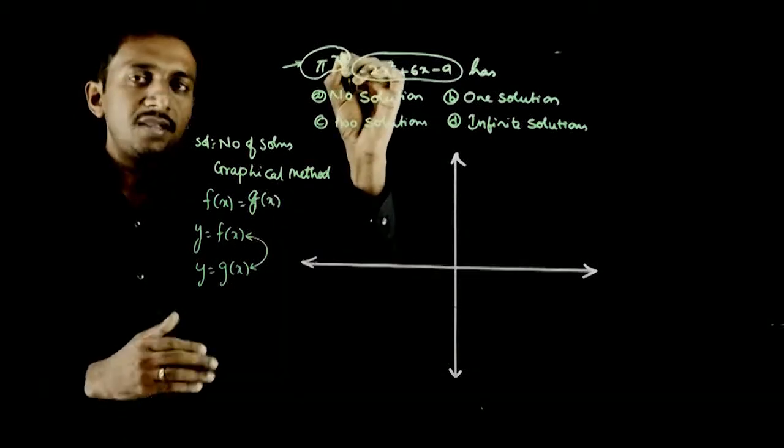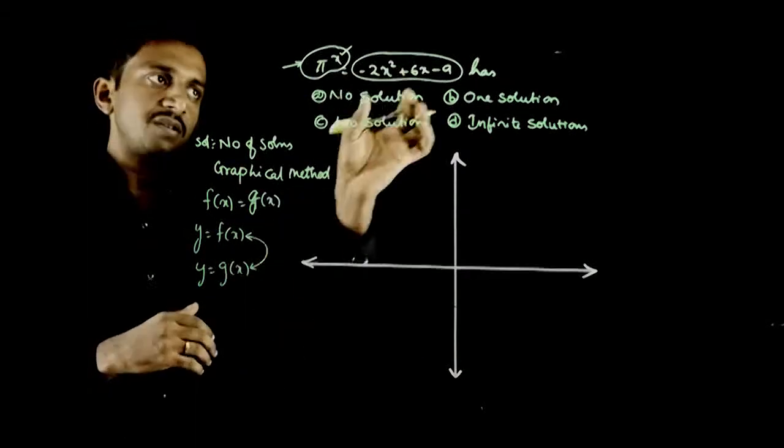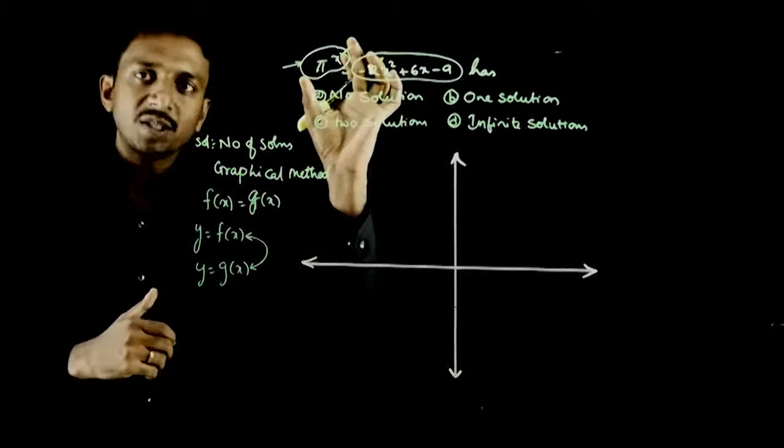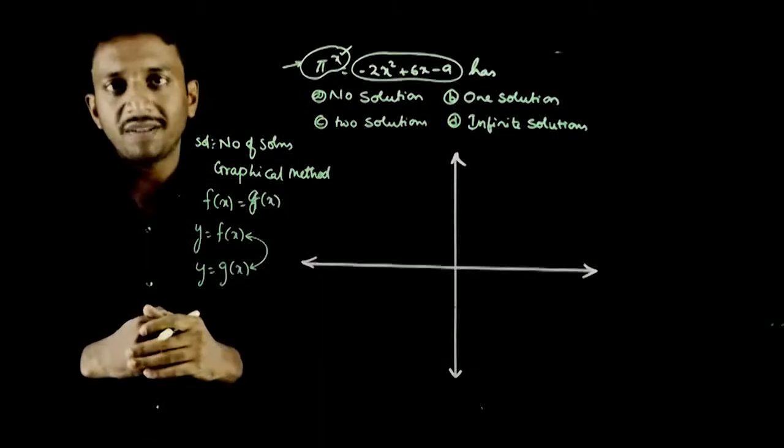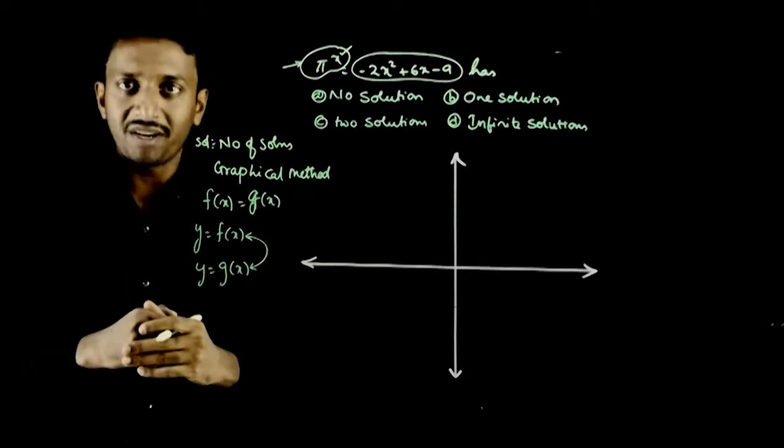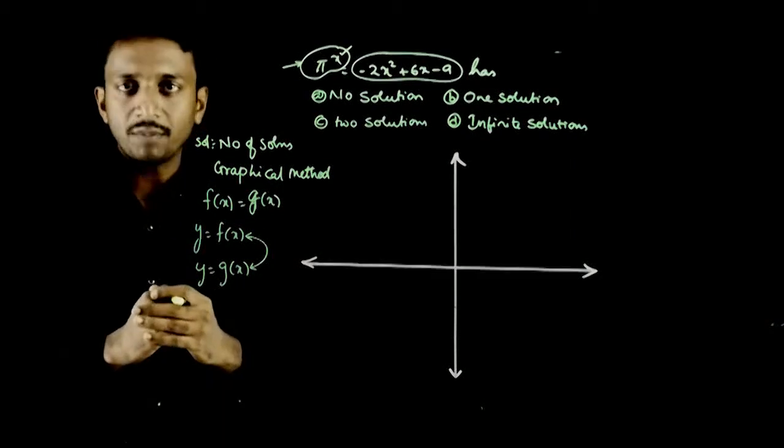Now in this question, f(x) is π^x, g(x) is this. This is an exponential function. π^x is an exponential function. -2x² + 6x - 9 is a quadratic function. So both graphs we need to draw.